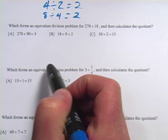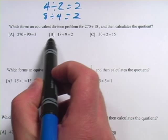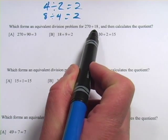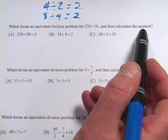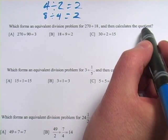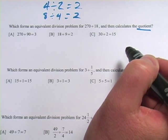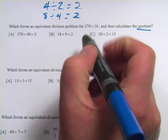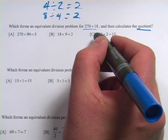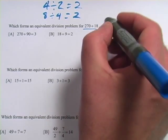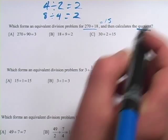This first problem says, which forms an equivalent division problem for 270 divided by 18, and then calculates the quotient? So just a reminder, the quotient—that's the answer in a division problem. Probably the first thing I would do is just go ahead and use my calculator and divide 270 by 18. And you would find out that that equals 15 if you punch that into your calculator.